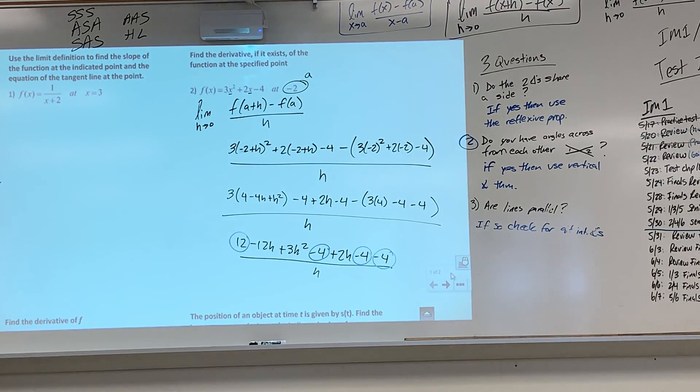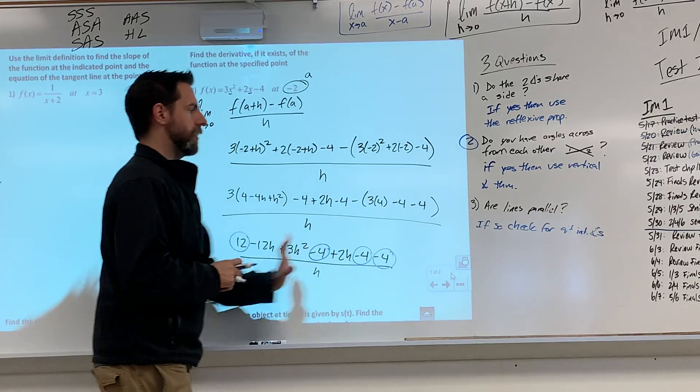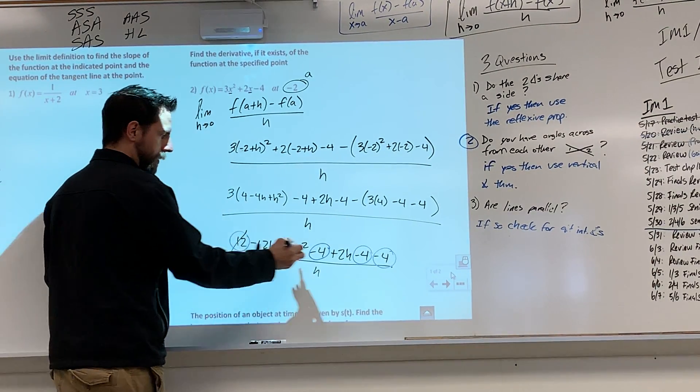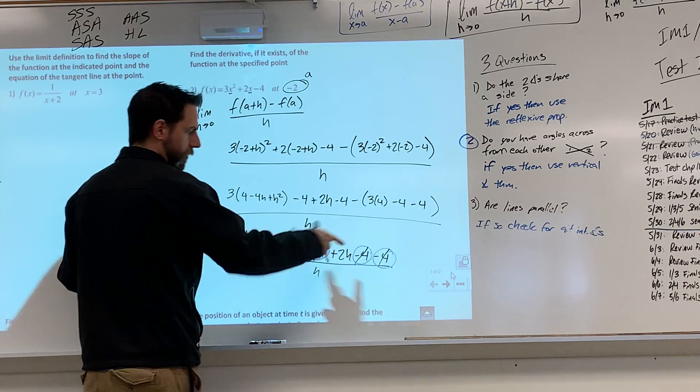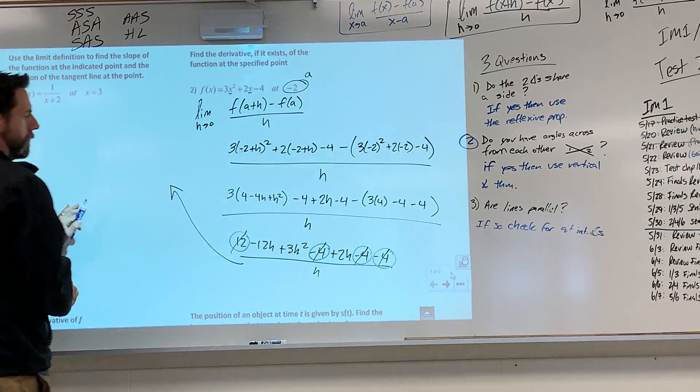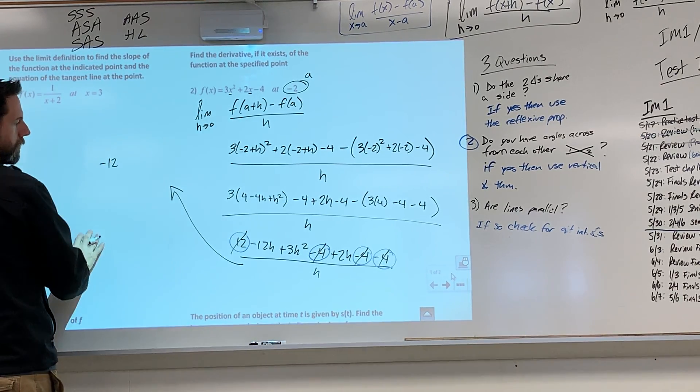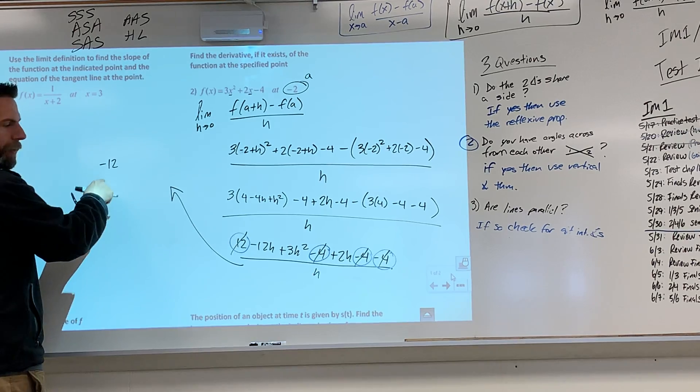So then we look at this, we combine like terms guys. When we're doing a question like this with h's on the bottom, all of the numbers without an h should cancel out almost all the time. There's very few examples in which they won't, but pretty much you need to cancel out all your numbers. And so that ends up what happens. Like bam, bam, bam. That 12 cancels out those negative 12s.